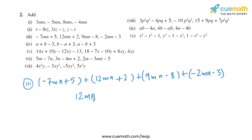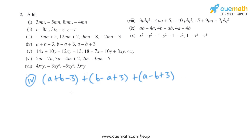Now we solve the constant terms: 5 plus 2 is 7, 7 minus 8 is minus 1, and minus 1 minus 3 is minus 4. So the result for part 3 is 12mn minus 4. Now let's move on to the fourth part.